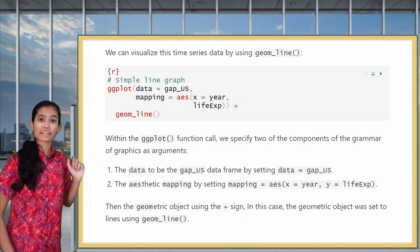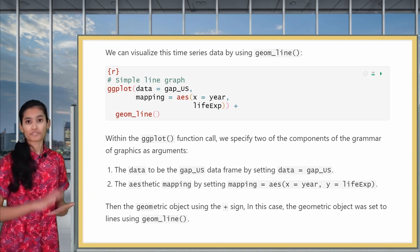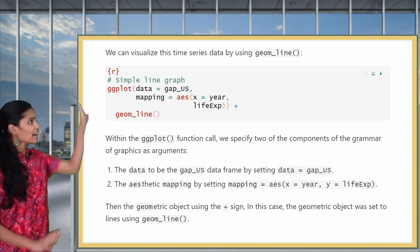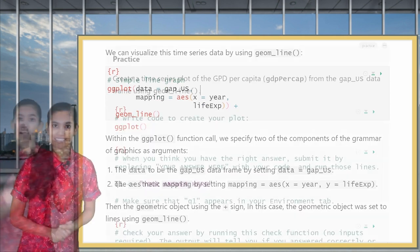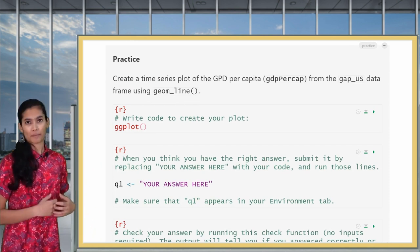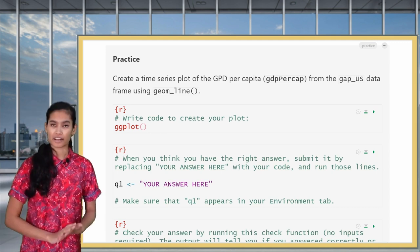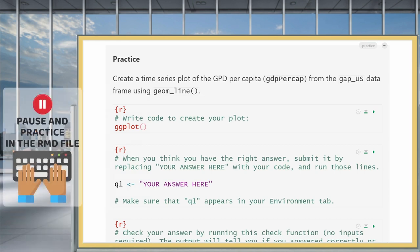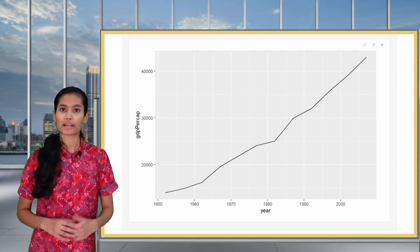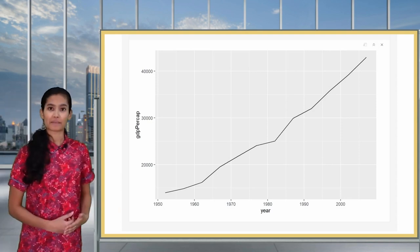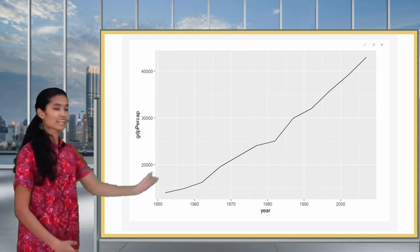I broke down this code as I was writing it, but if you'd like a written description, feel free to pause here. Once you're confident you understand how ggplot is used to make a line graph, it's time to practice. In this practice question, create a time series plot of GDP per capita over time using the GapUS data frame, but instead of life expectancy, you'll be plotting GDP.